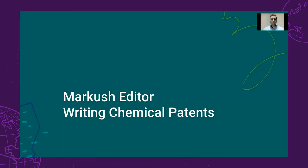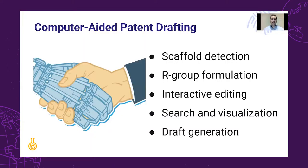Markush Editor offers a new way to write chemical patents. It is a computer-aided patent drafting solution that combines the best of human intelligence with automatic processes. It has built-in scaffold detection, R-group formulation, an interactive editor with built-in quality management functions, search and visualization capabilities, and automatic draft generation.